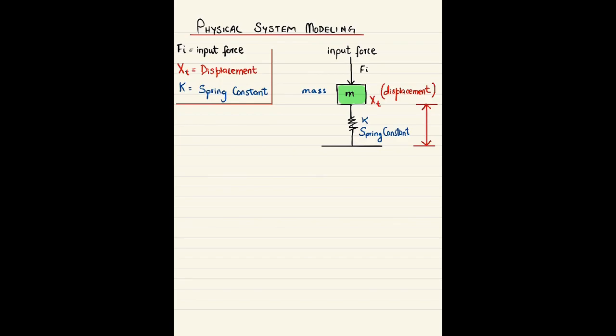To draw a block diagram, first of all we have to draw a free body diagram of this mechanical system given on this side. Before I go into any details, I would like to tell about the given variables of this diagram: fi representing the input force, xt representing the displacement, k as the spring constant, and m representing the mass.